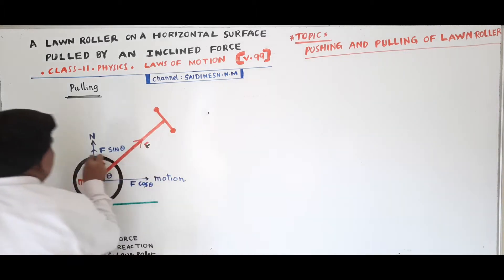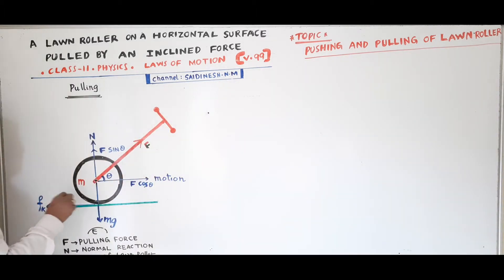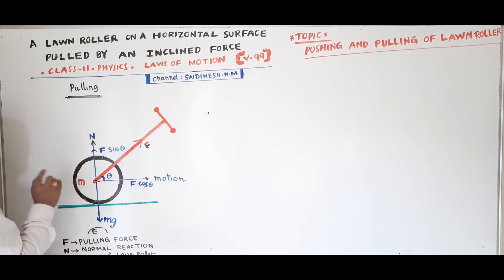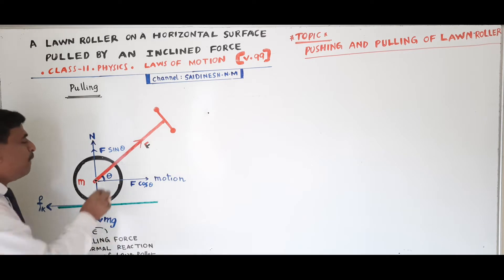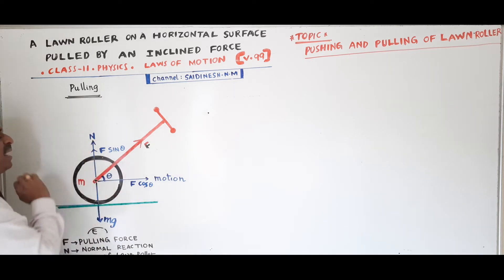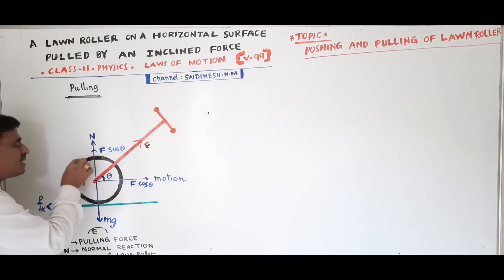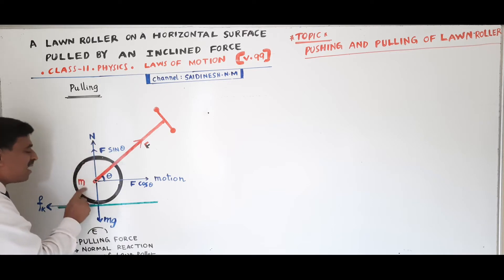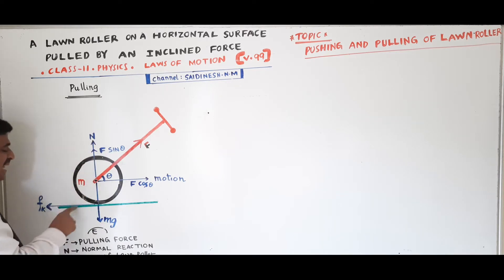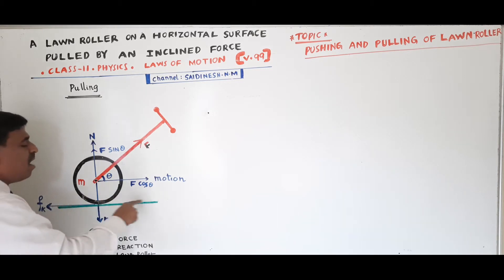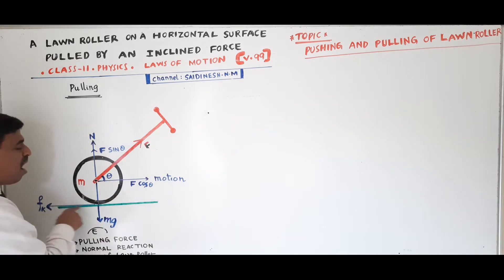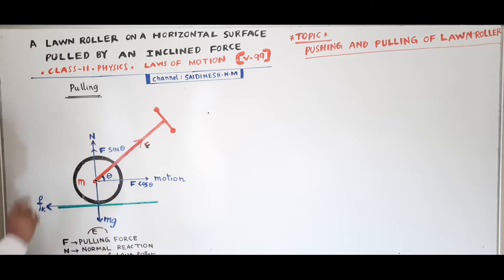Let us consider a land roller. The land roller is having some mass — it may be 10 kg, 20 kg, or 30 kg. It is resting on a rough horizontal surface, nothing but the ground.